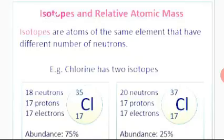Both chlorine isotopes have 17 electrons and 17 protons, since the number of protons always equals the number of electrons. For chlorine-35, the neutron count is 35 minus 17 = 18 neutrons. For chlorine-37, it is 37 minus 17 = 20 neutrons. So the neutron number changes between isotopes.